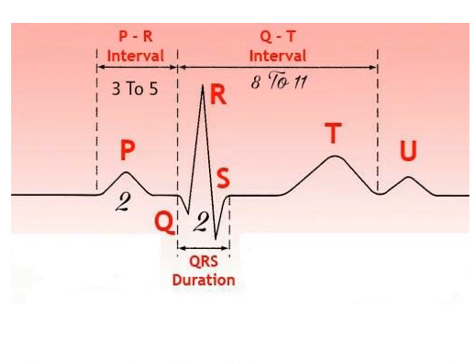The P wave starts the ECG trace waves, then the QRS complex, followed by the T wave, then the U wave. The PR interval is formed from three to five small boxes. The QRS complex duration is two small boxes. The QT interval is composed of eight to eleven small boxes.